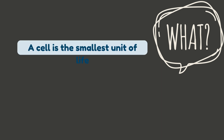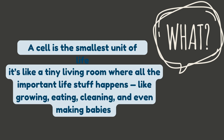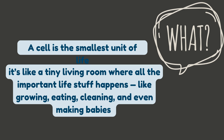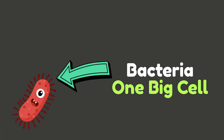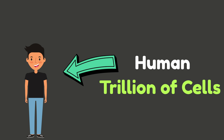So what exactly is a cell? A cell is the smallest unit of life. It's like a tiny living room where all the important life stuff happens, like growing, eating, cleaning, and even making babies — aka reproduction. Some living things, like bacteria, are just one single cell. Others, like humans, are made of trillions of cells.